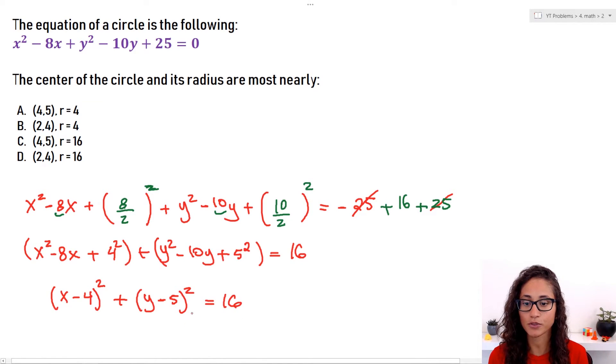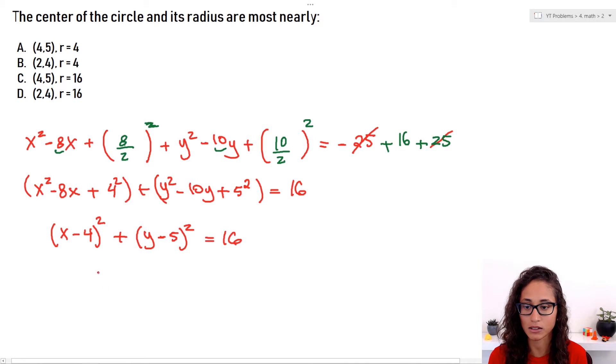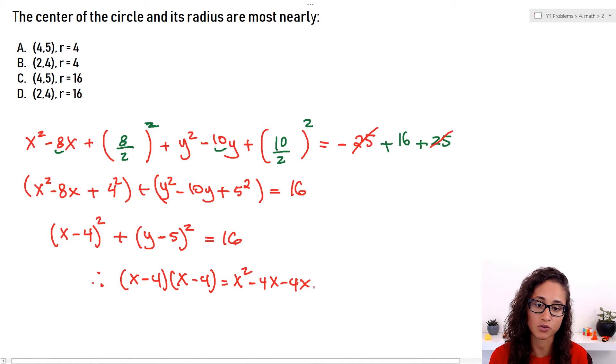So if this doesn't make sense, just think about it like this. If I do (x minus 4) and then I multiply it again by another (x minus 4) because it's (x minus 4) squared. If you guys remember this from algebra, we have to expand it, right? It's the FOIL rule. So we do x squared minus 4x minus 4x and then minus 4 times minus 4 which gives us plus 16. So I have x squared minus 8x plus 16 and that's exactly what I have here.